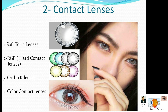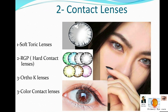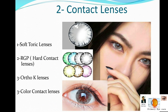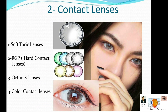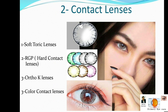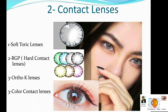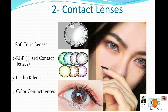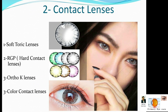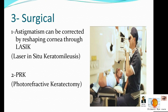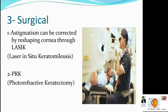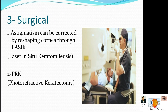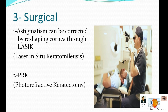A third option is ortho-k lenses. These are a special type of lens worn at night — they change the curvature of the cornea, and the next day you are able to see without lenses. Astigmatism correction is also available in color contact lenses. The surgical treatment options are LASIK and PRK, depending on your eye condition.